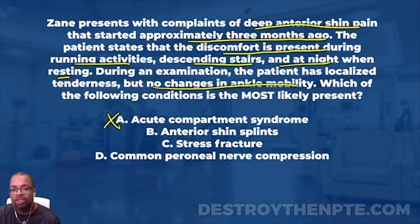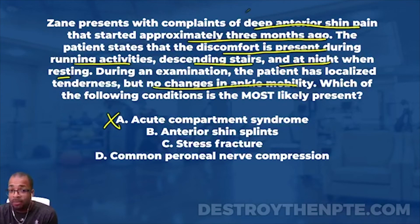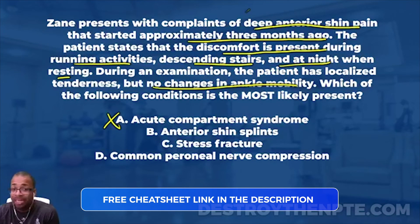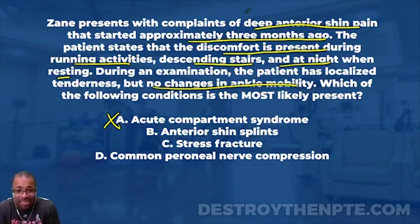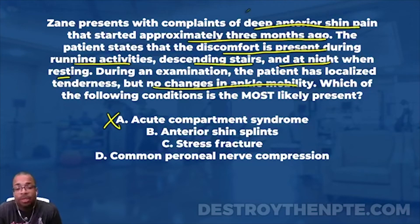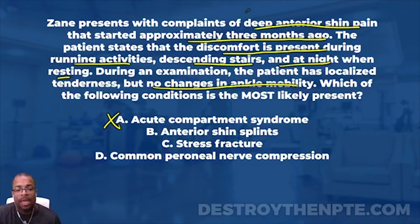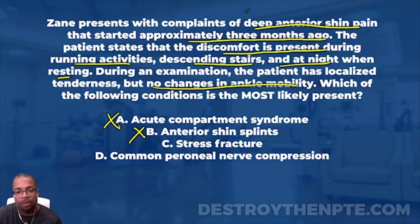It says no changes in ankle mobility, but I would expect a person to have limited plantar flexion with anterior shin splints, because the anterior tib is irritated. If you go to stretch it, you won't get very much motion because the patient will be in pain. So B - I don't like it. It just doesn't fit the clinical picture. Let's look at C.